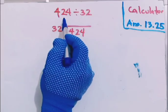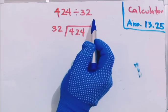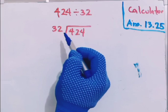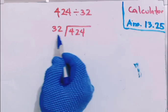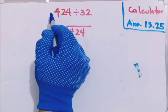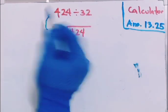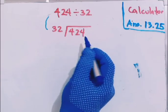This 424 will be your dividend, and 32 will be your divisor. Now, in order for us to solve this manually, we have to use this kind of format. 424 divided by 32 is the same as this one here. They are just the same; we're just using this type of format in order to solve it manually.